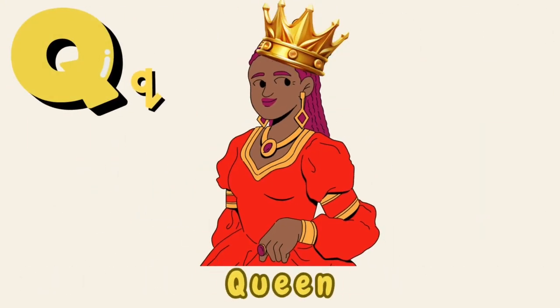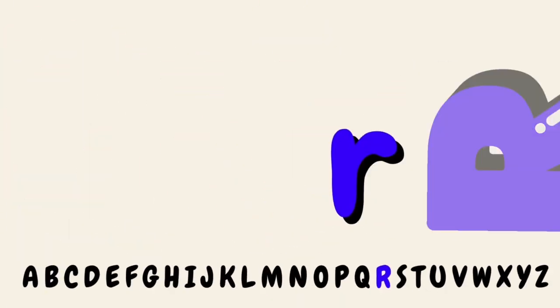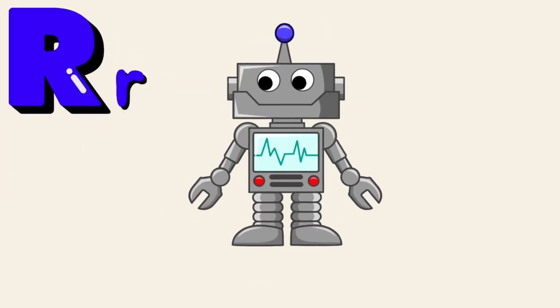Q, Q. The letter Q as in queen. Can you say queen? R, R, R, R. R as in robot. Can you do the robot?